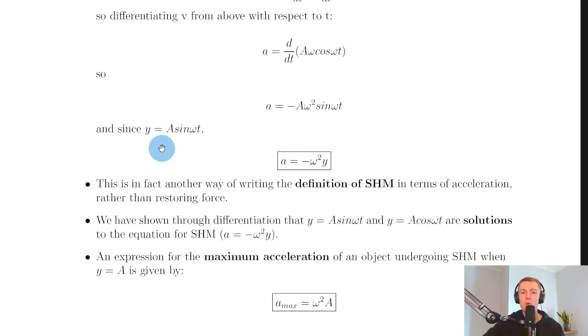But since we started with the displacement y equals a sine omega t, you can see that expression appear in this one here. So you've got the a there, and then you've got sine omega t. So if you take out the a sine omega t and substitute in for y, then you end up with a equals minus omega squared y.